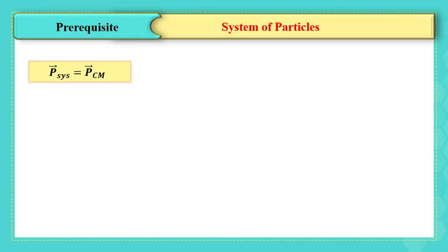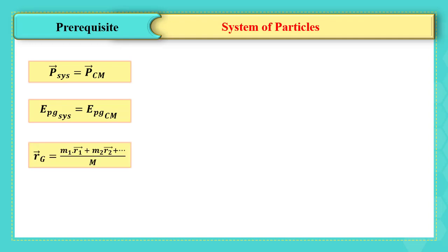We also said that the gravitational potential energy of the system of particles is equal to the gravitational potential energy of the center of mass of the system. The center of mass of the system can be found by (m₁r₁ + m₂r₂ + ...) over the total mass of the system, where r₁ and r₂ are the positions of each particle. Now the question is: does the moment of inertia of the system of particles equal that of the center of mass of the system?